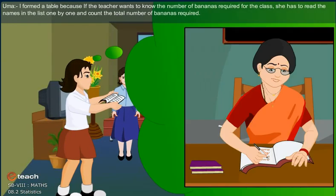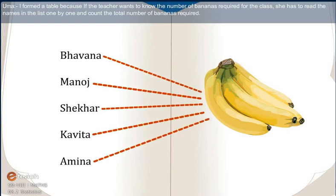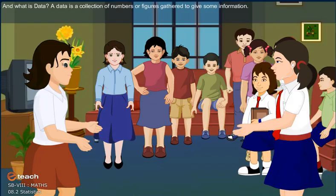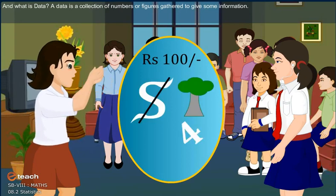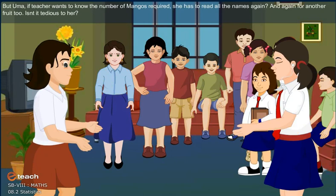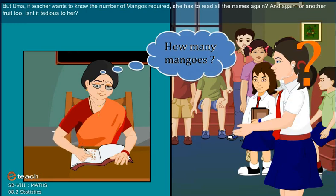Uma explained: I formed a table because if the teacher wants to know the number of bananas required for the class, she has to read the names in the list one by one and count the total number of bananas required. A data is a collection of numbers or figures gathered to give some information. But if the teacher wants to know the number of mangoes required, she has to read all the names again and again for another fruit too. Isn't it tedious for her?